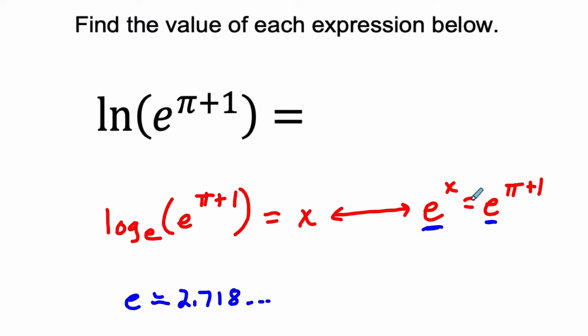So their bases are equal. So if they're going to be equal on both sides, that can only happen if their exponents are equal. So that just means that x would have to equal pi plus 1. And that's exactly what we get here.